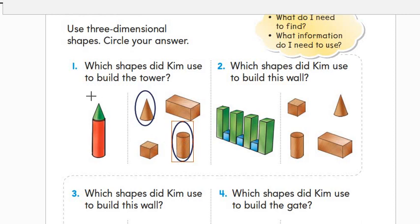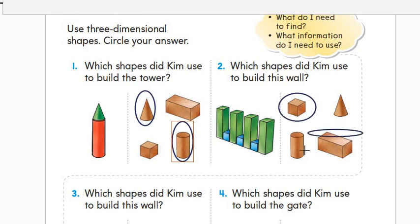Number two: which shapes did Kim use to build this wall? He used rectangular prisms and cubes. So we will circle the cube and the rectangular prism. How many rectangular prisms did he use? One, two, three, and four — four rectangular prisms. How many cubes? One, two, three — three cubes.